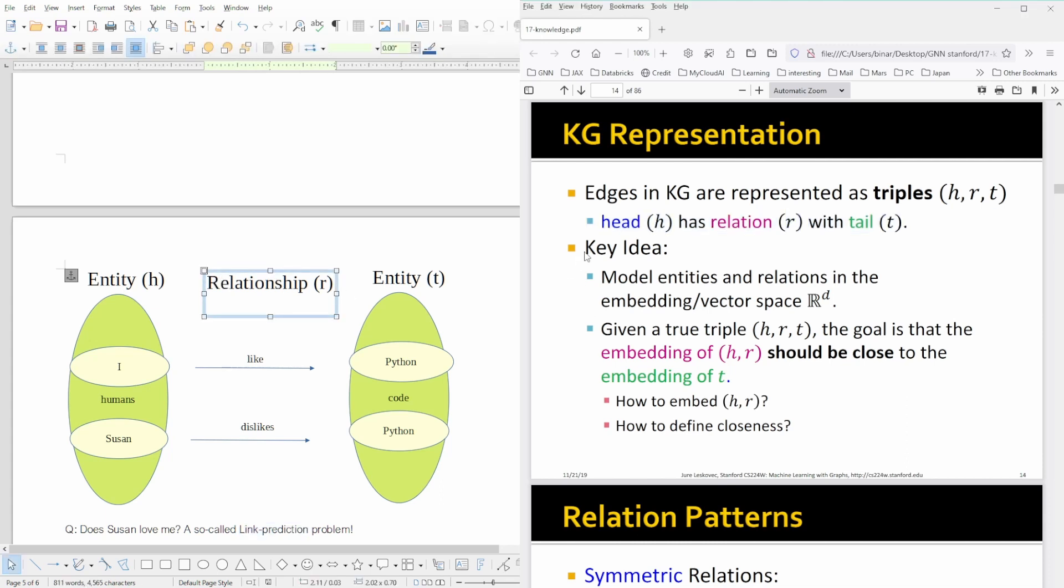Now the key idea is, again, like in word embedding or like in graph embedding, that the model entities—so I and Susan and Python—and the relations, like 'like' and 'dislike,' that we have a model that the entities and the relations are mapped to an embedding space, are mapped to an embedding space. And now we hope that the topological structure is a vector space R^d—model entities and relations in the embedding or vector space R^d.